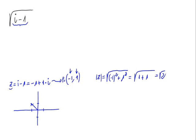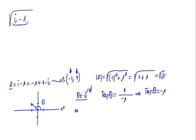Now let's calculate the argument. The argument for this vector is the angle from the x-axis to the vector. Let's call this angle theta. As we can see, this angle is from the second quadrant. The tangent of this angle equals y divided by x, which is 1 divided by minus 1, so the tangent of theta equals minus 1.